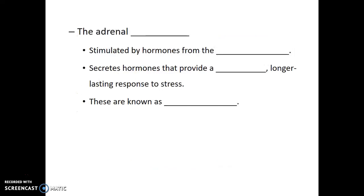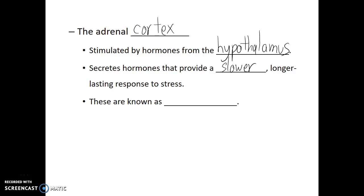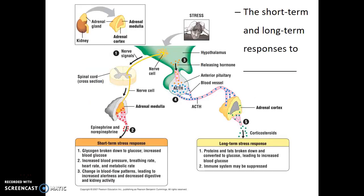Conversely, if someone is in a stressful situation for long periods of time, this will stimulate the adrenal cortex. The adrenal cortex is stimulated by hormones from the hypothalamus rather than through a direct electrical connection. The adrenal cortex secretes hormones that provide a slower but longer-lasting response to stress. These hormones are known as corticosteroids. So the adrenal medulla handles the short-term stress response, while the adrenal cortex handles the long-term stress response.